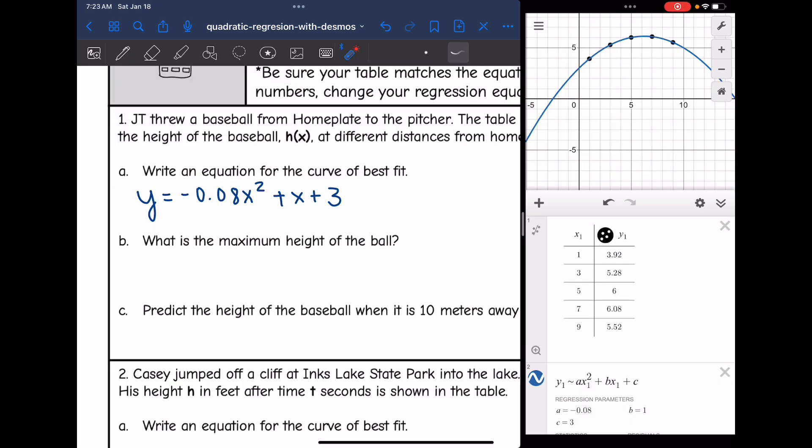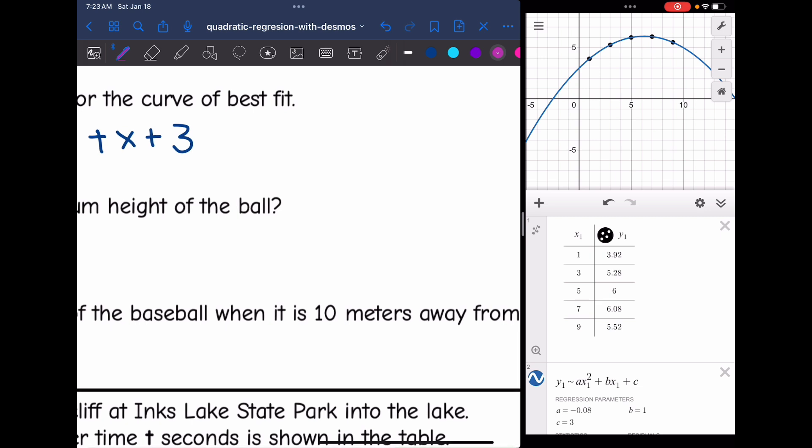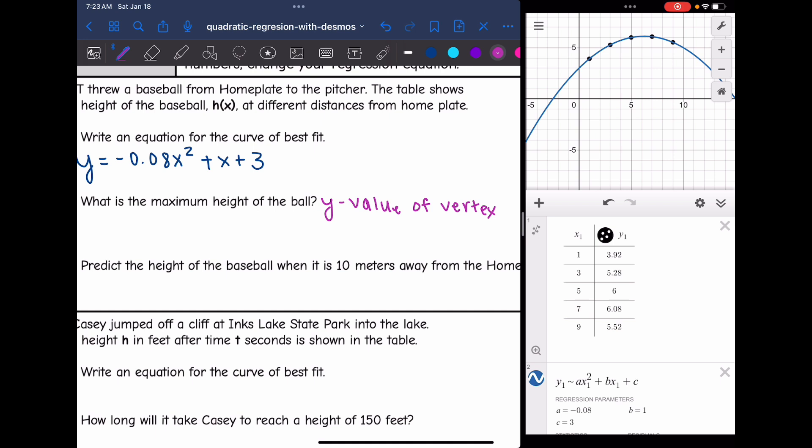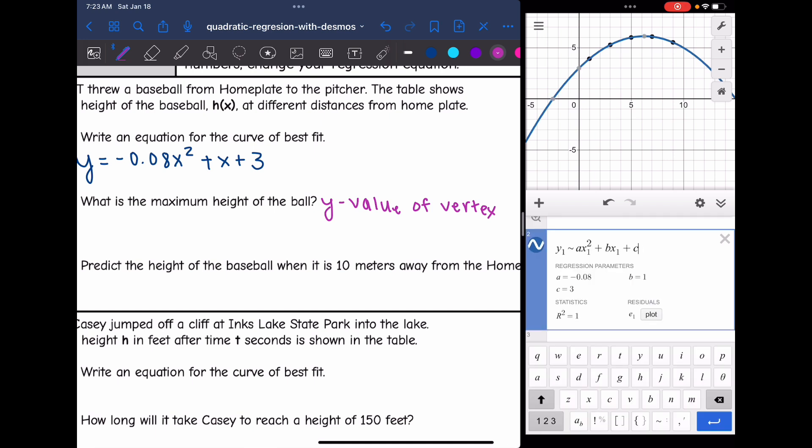Okay, let's take a look at the next question. It says what is the maximum height of the ball? So that is the top of the parabola, the maximum height. That is going to be the y value of the vertex. If you notice, Desmos went ahead and graphed that equation of best fit for us. You can see it is blue.